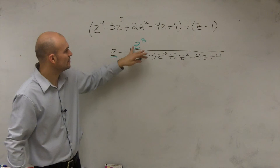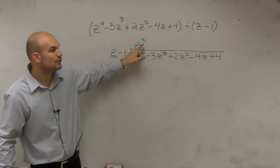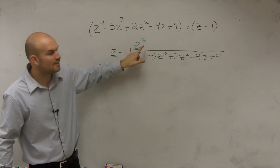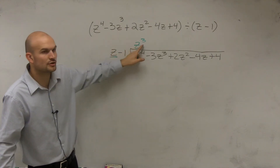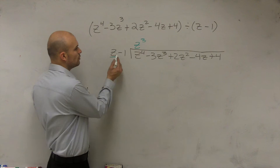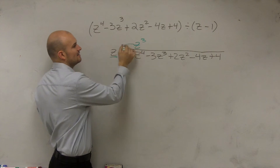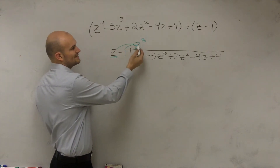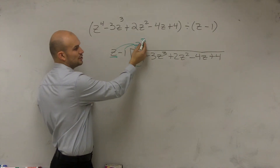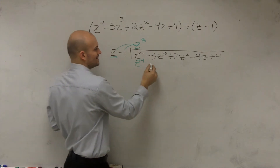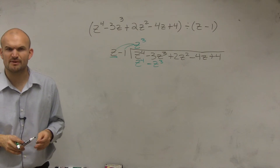Once you have your answer, you're going to multiply that quotient by both of your divisor terms. You only use the leading term to divide into the first term, and then once you know it, you multiply it back times both terms. So: z cubed times z gives you z to the fourth, and z cubed times negative one gives you negative z cubed.